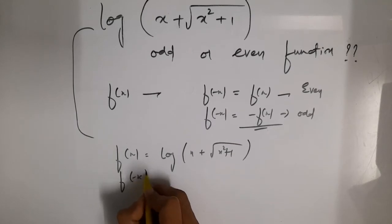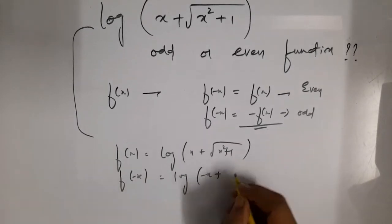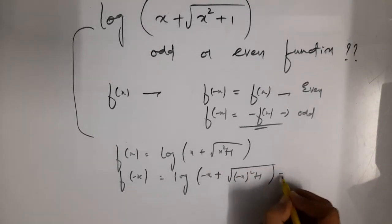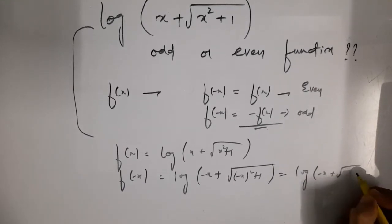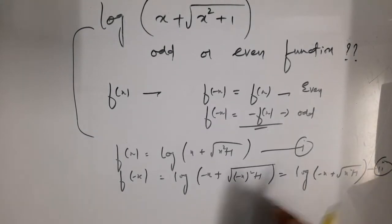So students, if I check for f minus x, log minus x plus root me minus x square plus 1. This is nothing but log of minus x plus root me x square plus 1. See this part is number 1 and this part is number 2.